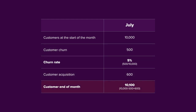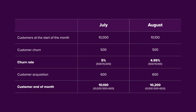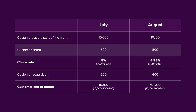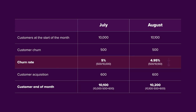That leaves them with 10,100 customers at the end of the month and a churn rate of 5%. Let's say they have some similar behavior in August: 600 customers are acquired and 500 customers churn. In reality, their churn is going to decrease in August because their subscribers have grown slightly while the number of customers that churn stays the same.